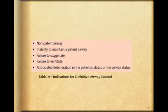Indications for definitive airway control — Table 21.1 in your book: a non-patent airway with no air coming in or out; inability to maintain a patent airway; failure to oxygenate the patient; failure to ventilate; and anticipating deterioration of the patient's status or airway status, where things will go south if we don't secure an airway.